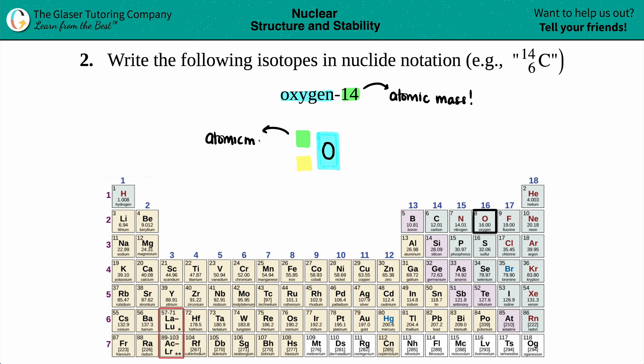So the atomic mass will be in the top place, and in this case it's going to be 14. The bottom number represents the atomic number, which should always be smaller than the atomic mass. But for oxygen-14, how are we going to know what the atomic number is? For every element, the atomic number never changes.